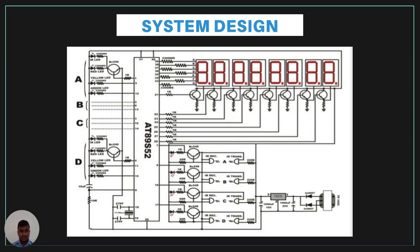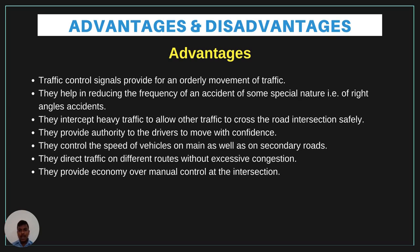This is the actual design of the system. The advantages of the Smart Traffic Lighting System include: traffic control signals provide orderly movement of traffic; they allow heavy traffic to cross road intersections safely; they provide authority to drivers to move with confidence; they control vehicle speed on main and secondary roads; they direct traffic on different routes without excessive congestion; and they provide economy over manual control. An additional key advantage is that it accurately records data and time.